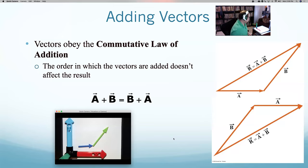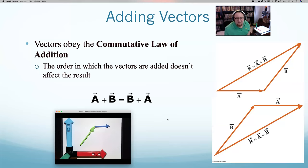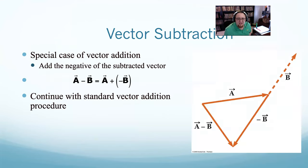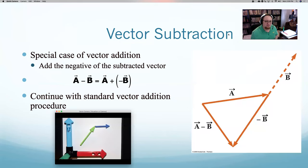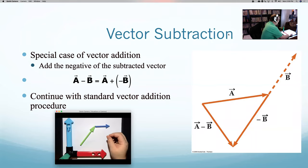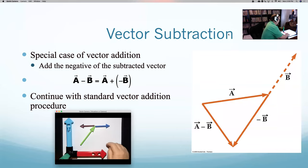Now, the tip-to-tail idea works well for adding vectors, but for subtracting vectors it's a little more confusing. If you want to subtract vectors, the answer is you basically don't subtract vectors. Anytime you want to subtract vectors, instead of subtracting, add a negative vector. If this is vector A and B, and I want A minus B, that is the same as A plus negative B. Negative B is just B turned around 180 degrees. So A minus B would be that. Anytime you want to subtract vectors, just add by a negative vector.